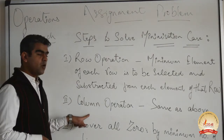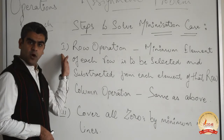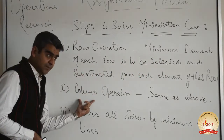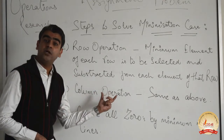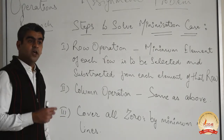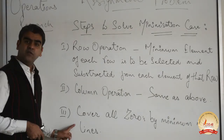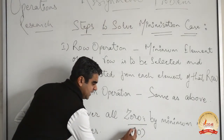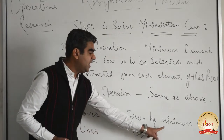In step number 2, called the column operation, we do the same as in row operation. The minimum element of each column is to be selected and subtracted from each element of that particular column. When we complete step number 1 and step number 2, we obtain a new matrix in which we will find elements equal to zero.